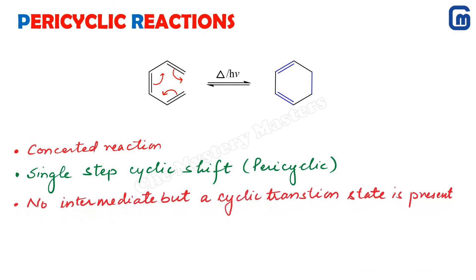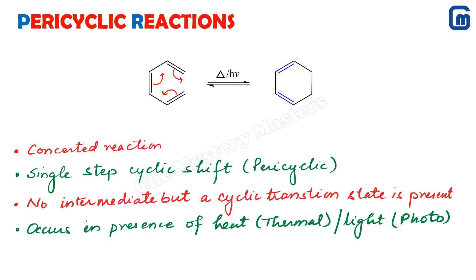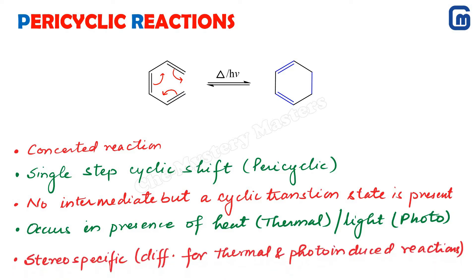The third point is that there is no intermediate formed in this reaction, but a cyclic transition state is always present, which helps the reactant convert to the product. The reaction can proceed under thermal conditions or photochemical conditions, and in both cases the products are found to be somewhat different and stereospecific in nature — which we will discuss in coming lectures.